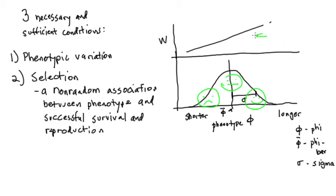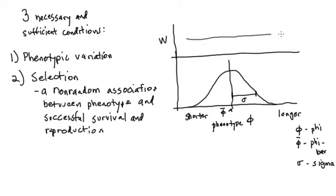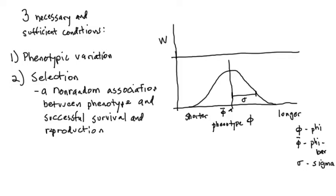What would the fitness graph look like in the absence of selection — that is, if condition 2 were unmet? Arm length would have no predictive value for survival and reproduction, so everyone would have exactly the same expected fitness. The fitness graph W would just be a horizontal line straight across. Anything but a horizontal line — sloping downward or upward, humping in the middle, or bowl-shaped — represents a non-random association between fitness and phenotype and would satisfy the second condition.